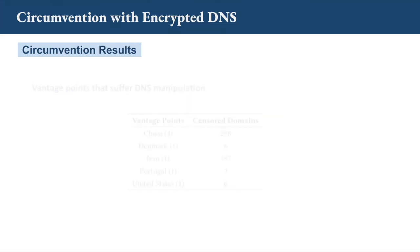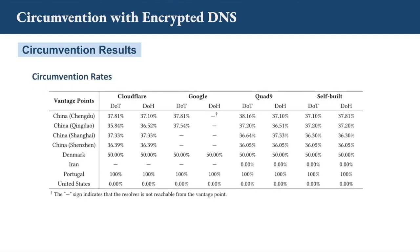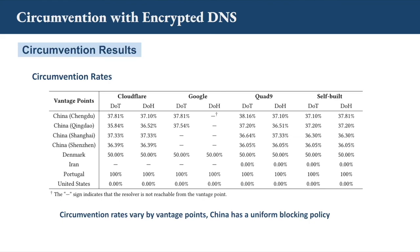Now let's check our circumvention results. In total, we discovered eight vantage points that suffer DNS manipulation from on-path devices, with the vantage points in China and Iran observing relatively more censored domains. The circumvention rate highly depends on the vantage point and can vary from 0% to 100%. In China, the four vantage points observe almost the same set of domains that can be unblocked by encrypted DNS. Comparing the table column by column, there is almost no difference, meaning that changing DoT and DoH resolvers does not impact the circumvention rate.